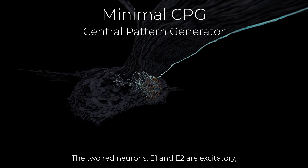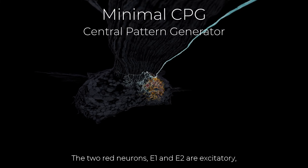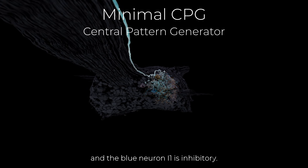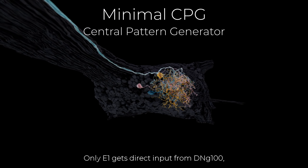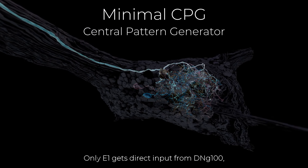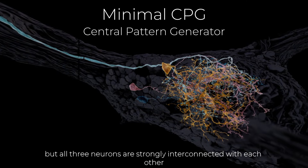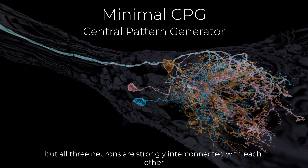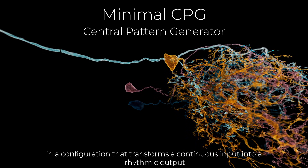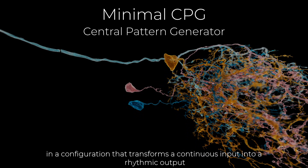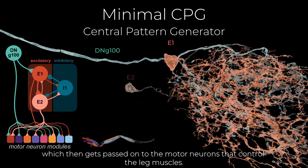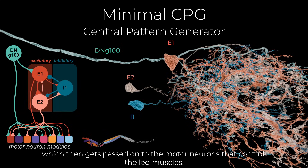The two red neurons, E1 and E2, are excitatory, and the blue neuron, I1, is inhibitory. Only E1 gets direct input from DNG100, but all three neurons are strongly interconnected with each other in a configuration that transforms a continuous input into a rhythmic output, which then gets passed on to the motor neurons that control the leg muscles.